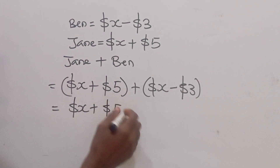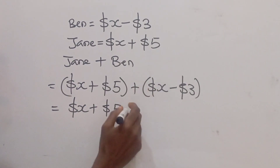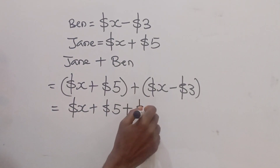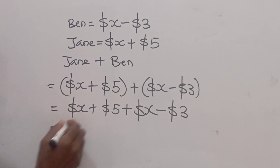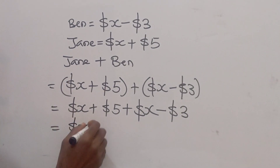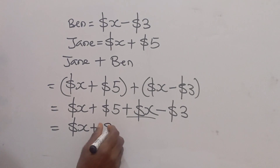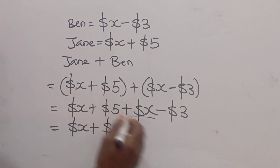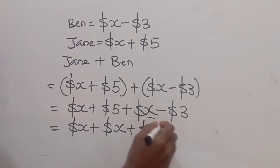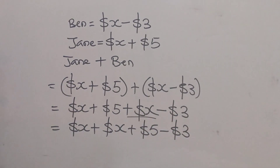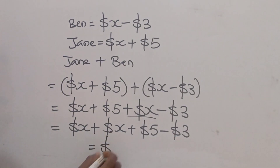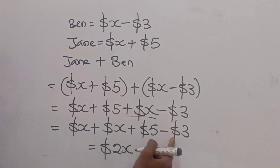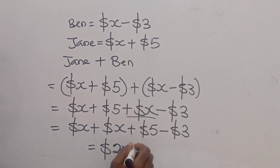So rearranging, we have x plus five, plus x minus three. Collecting like terms: x plus x gives us two x, and five minus three gives us plus two dollars. So the result is two x plus two dollars.